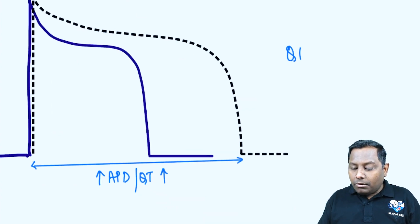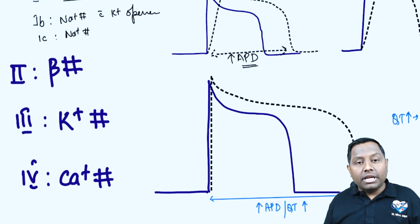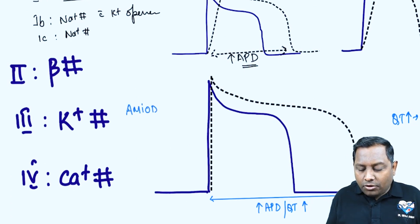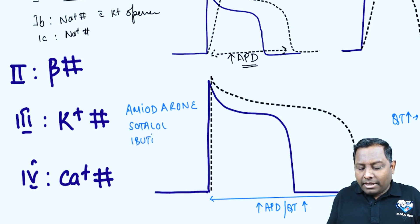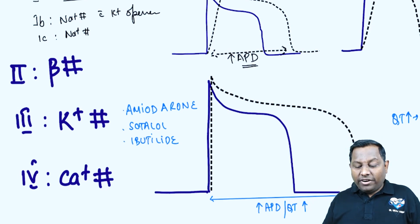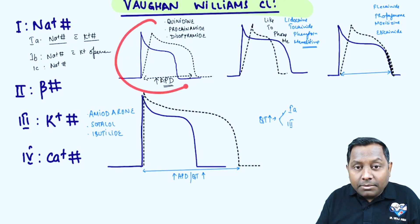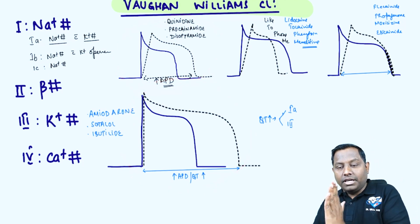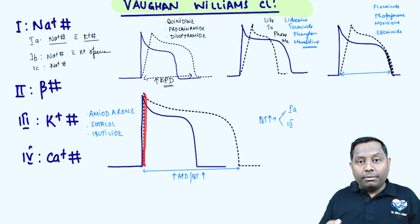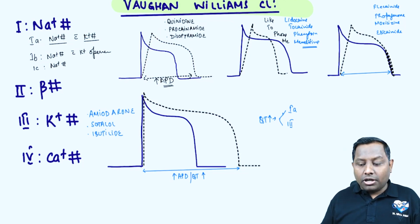QT interval prolongation can be caused by two important classes: Class 1a — Queen, Prince, Dasi (Quinidine, Procainamide, Disopyramide) — and Class 3 anti-arrhythmic drugs. Important Class 3 drugs include Amiodarone, Sotalol, Ibutilide, and Dofetilide. The key difference: Class 3 increases action potential duration but has no effect on the slope of depolarization, while Class 1a increases action potential duration AND reduces the slope of depolarization.